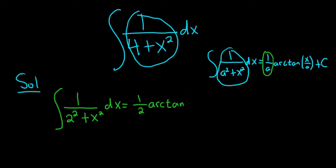And then it's x over 2, right, x over a. So x over 2, parentheses, and then don't forget the plus c, which is our arbitrary constant of integration.